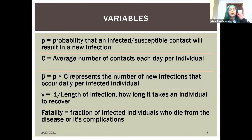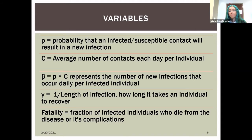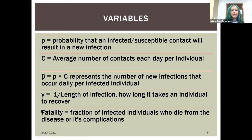Additional variables in the SIR equations include P, the probability that an infected contact results in a new infection — essentially the infectious rate. C represents the average number of contacts per individual per day. The product of P and C is beta, the number of new infections occurring daily per infected individual. Gamma is the recovery rate, and fatality is the fraction of infected individuals who die from the disease.